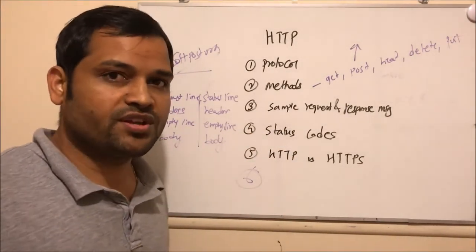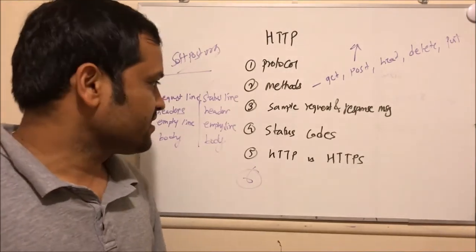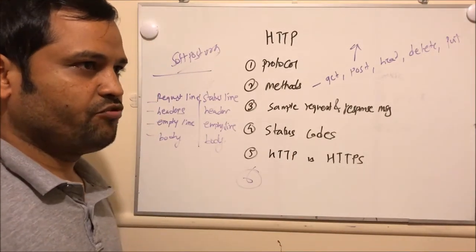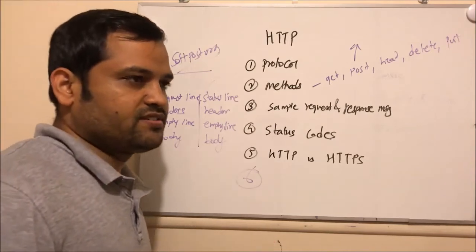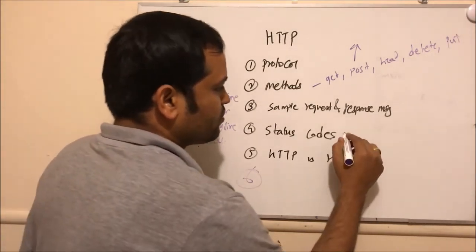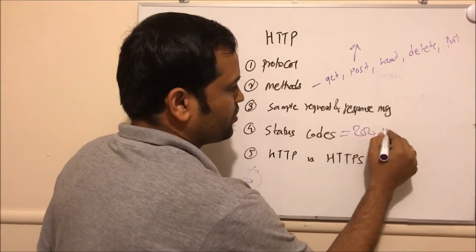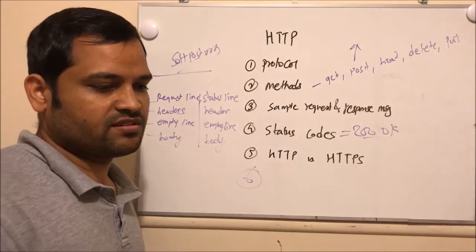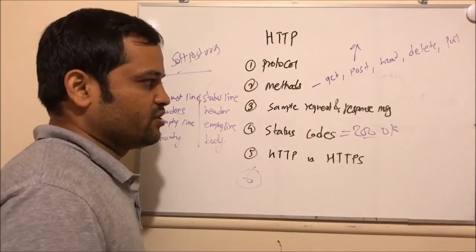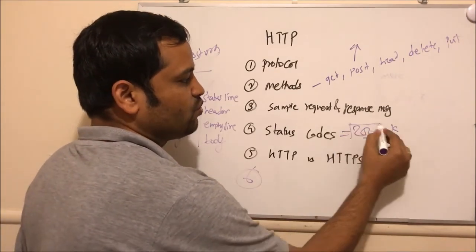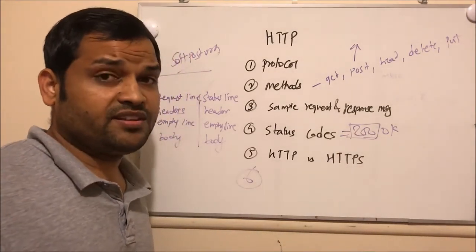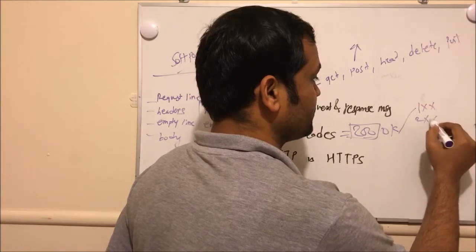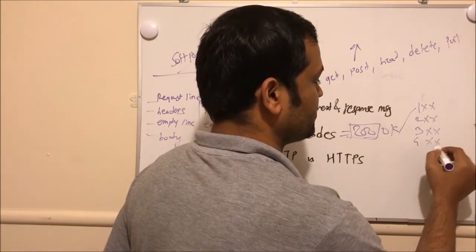Now let us take a look at status codes. Whenever we get a response from the server, the server responds with various codes. If the request is successful, we get the code 200 OK, meaning the server received the client's request and responded successfully. These response codes are categorized into five categories: 1XX, 2XX, 3XX, 4XX, and 5XX.